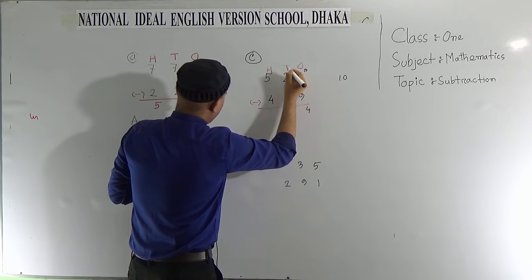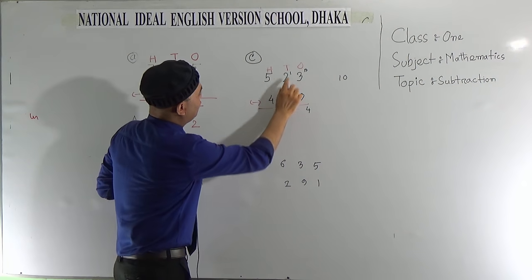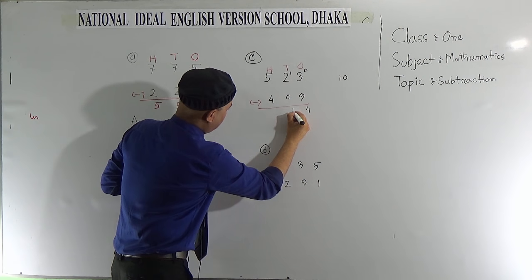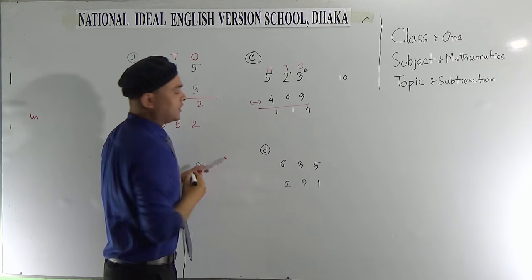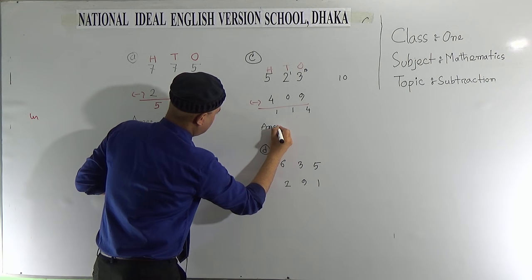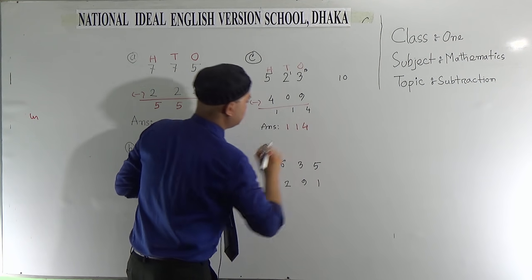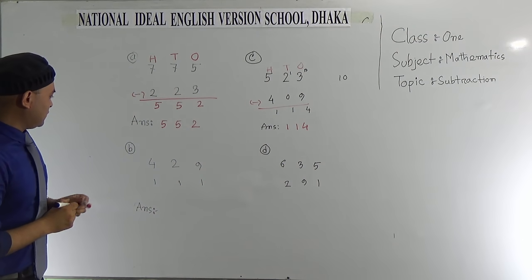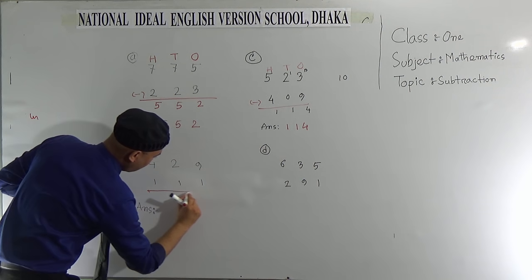And if we take 1 ten from 2, then here remains 1 ten. Subtract 0 from 1, it will be 1. Then subtract 4 from 5, it will be 1. The answer to this is 114. Now the next one.